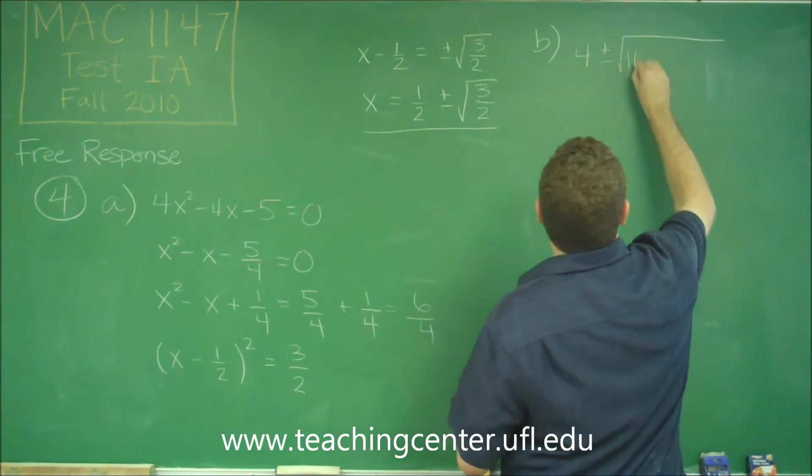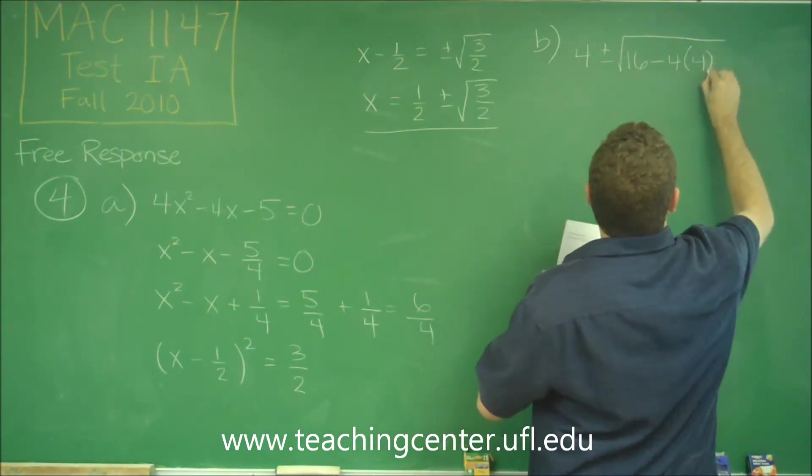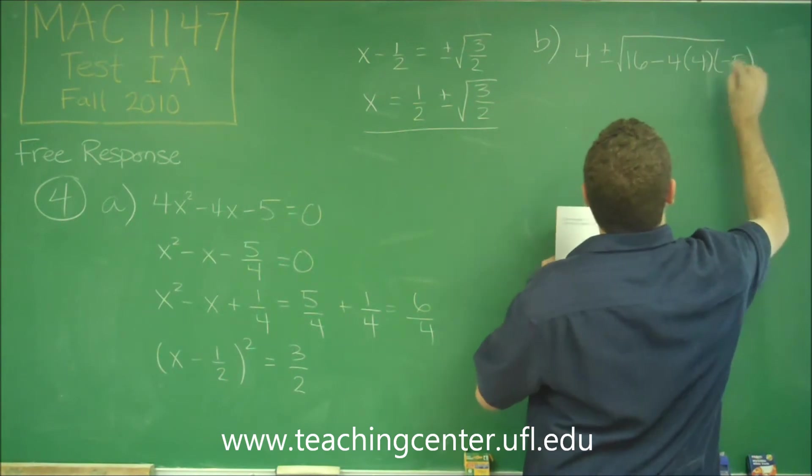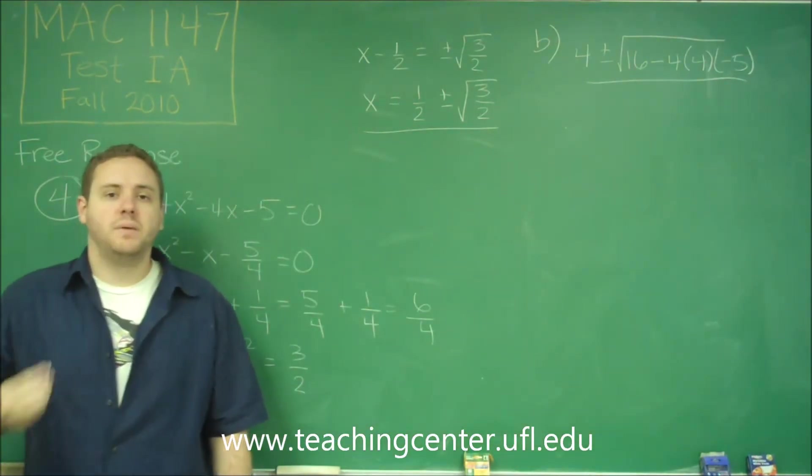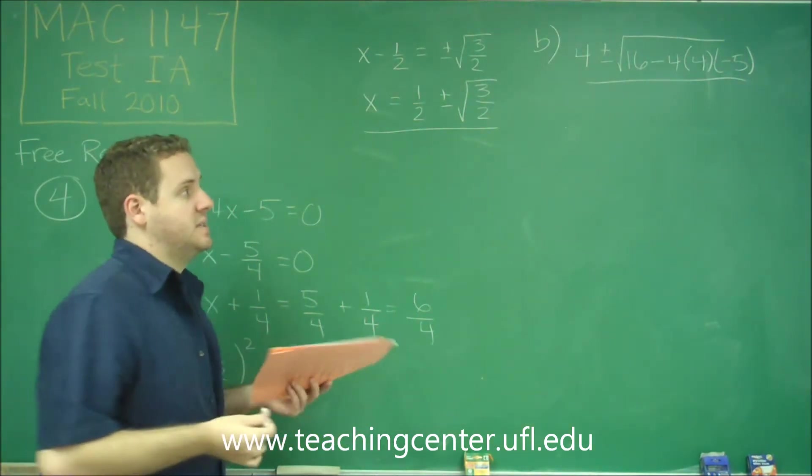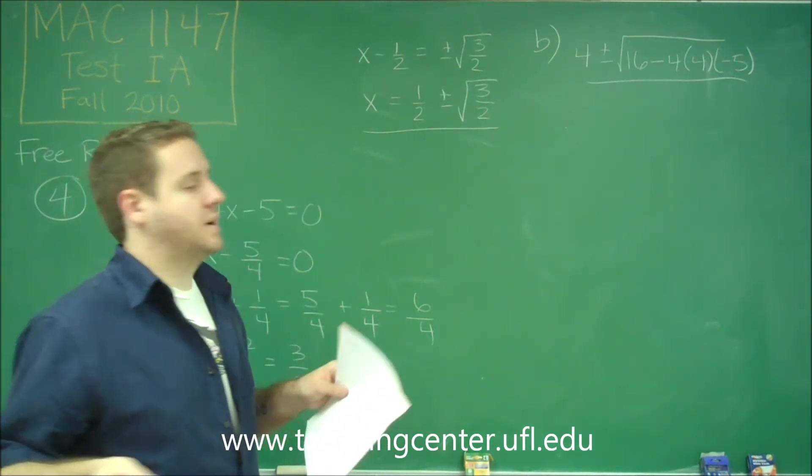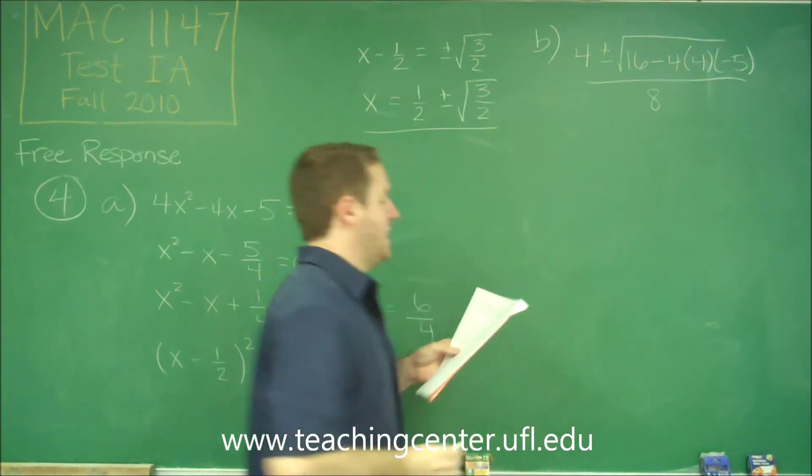So we'll have 16 - 4 × 4 × -5. Very important when you plug into the quadratic formula that you make sure you plug in your positives and negatives correctly. So in this case, b is negative and c is negative, so you need to take that into account here. Finally, divided by 2a, which would be 8, because a is 4.